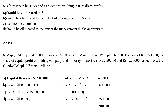MCQ 81: Intragroup Balance and Transaction Resulting in Unrealized Profit — Option A should be Eliminated in Full, Option B eliminated to the extent of Holding Company Share, Option C need not be eliminated, Option D eliminated to the extent Management thinks appropriate. The correct answer is Option A — should be Eliminated in Full. Intragroup Balance and Transaction Resulting in Unrealized Profit should be Eliminated in Full.